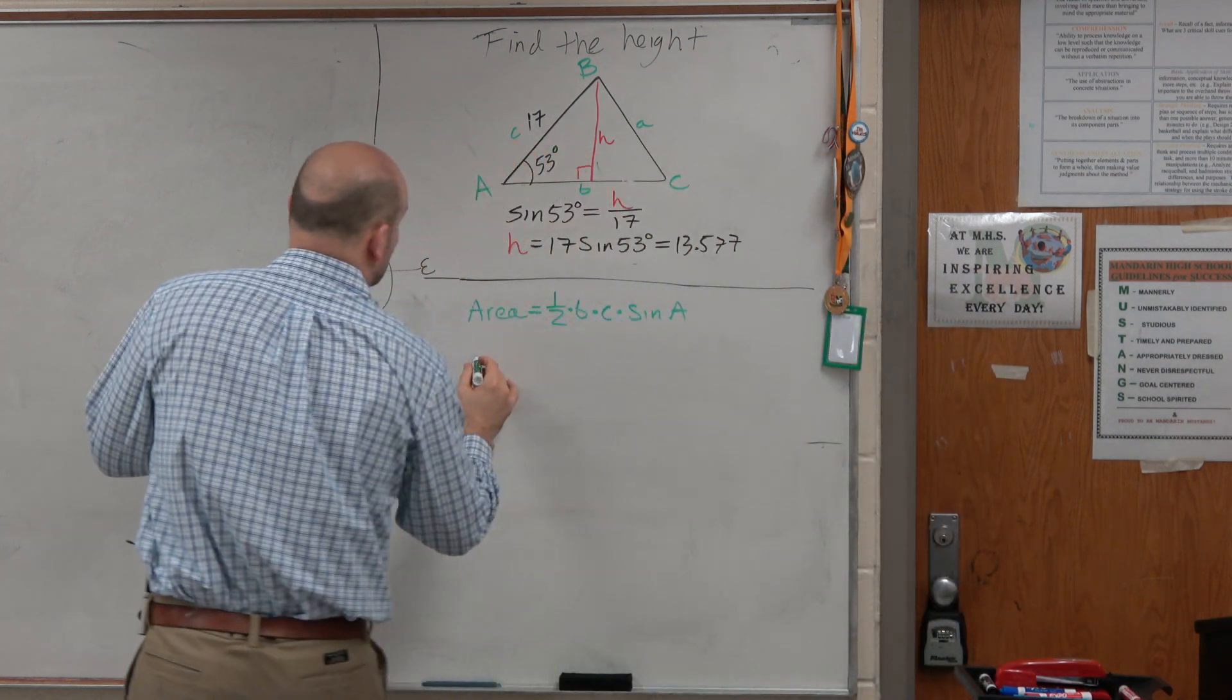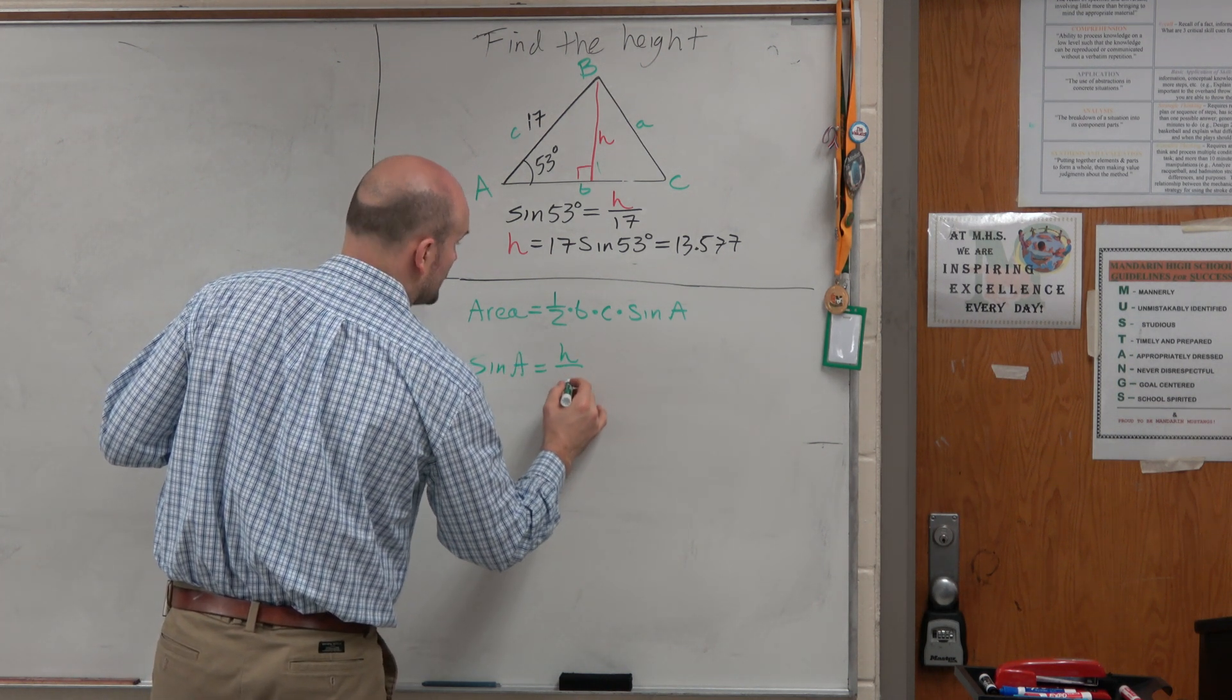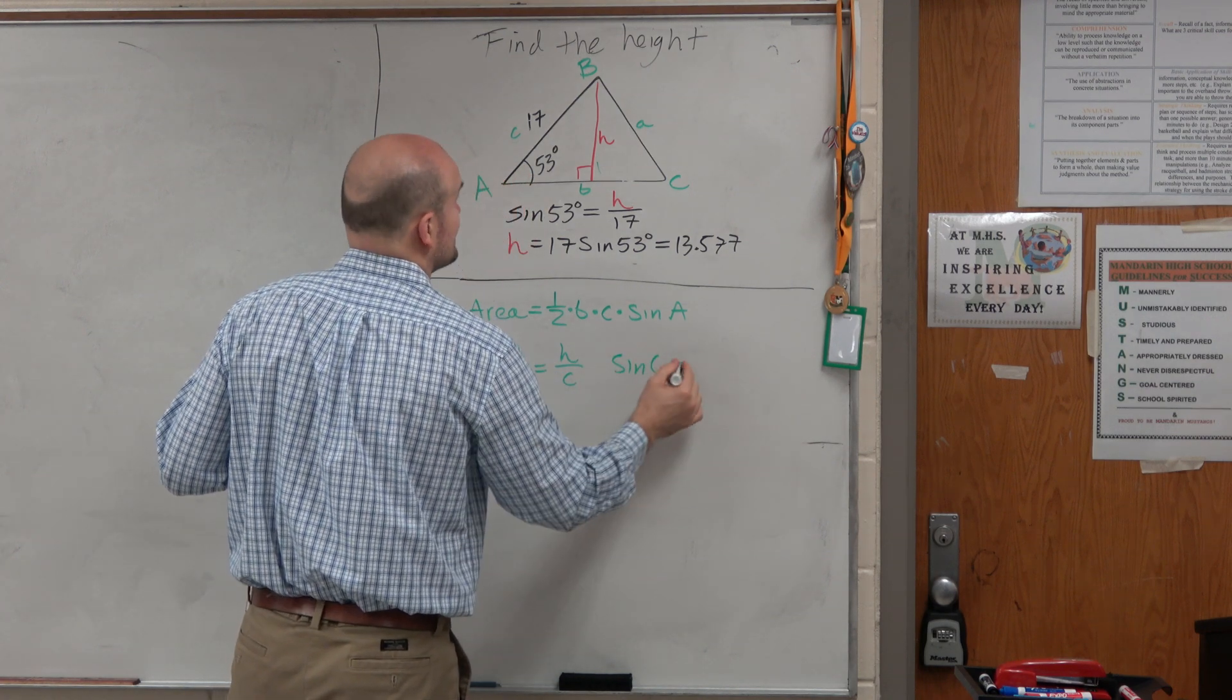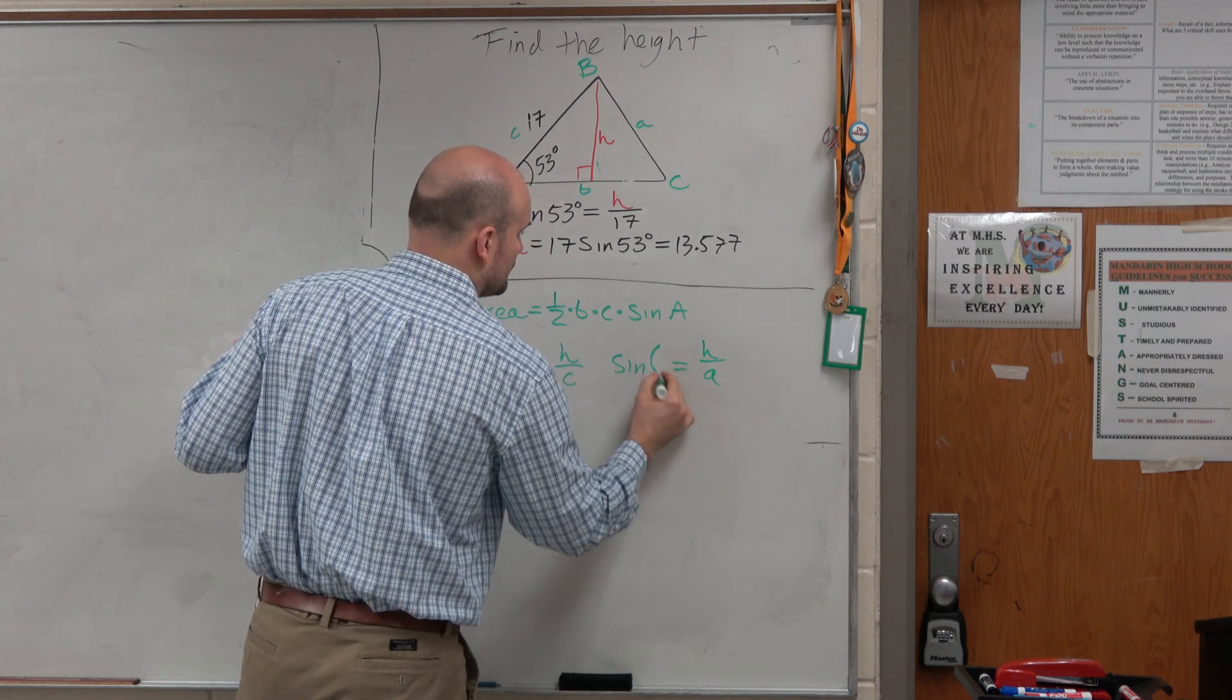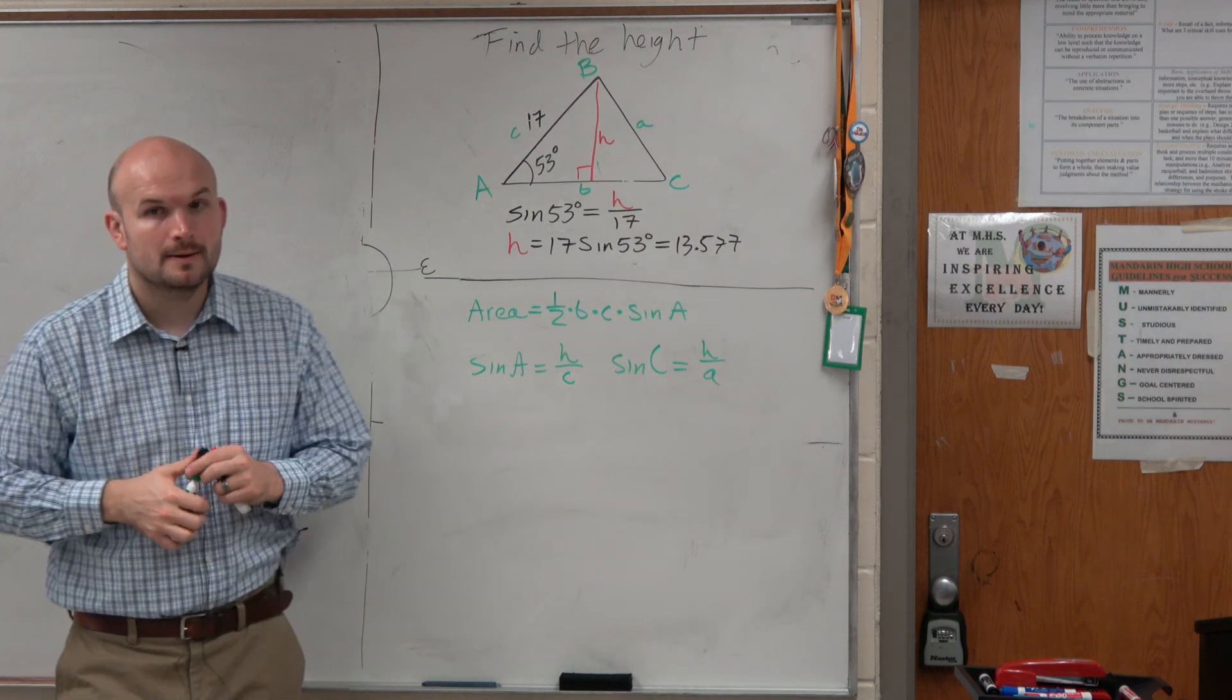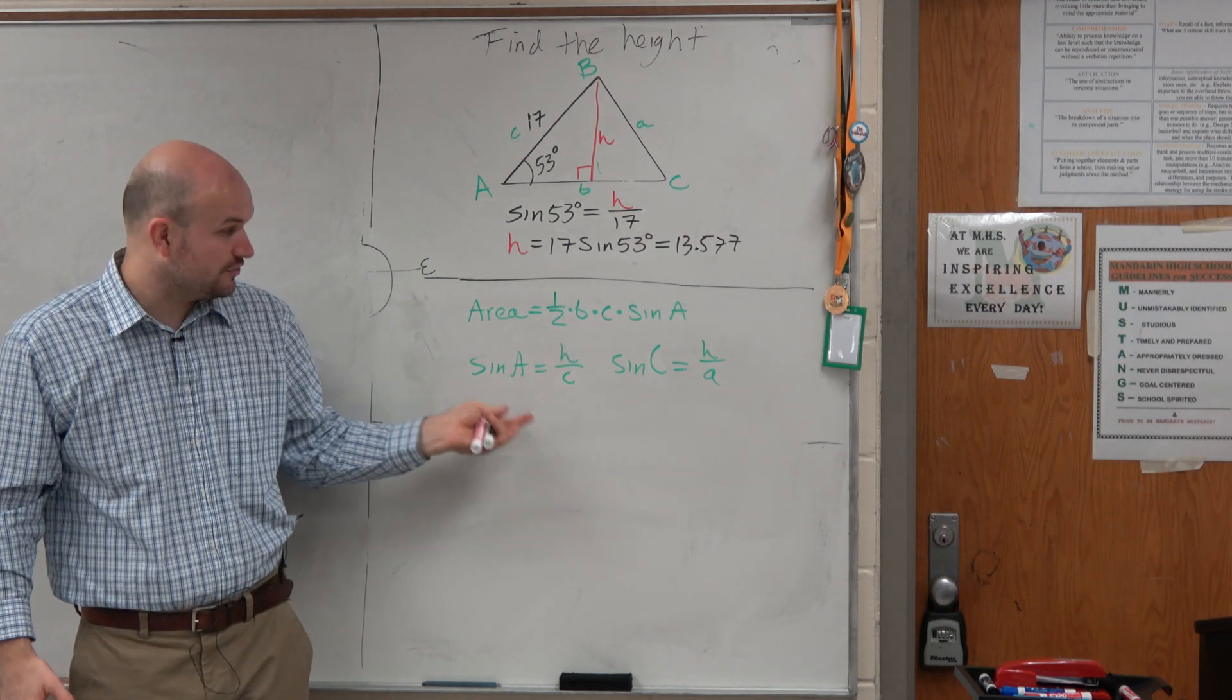For instance, the sine of A is equal to h over c, whereas the sine of C is equal to h over a. I'll make my C's really big, my little c's really small. But based on the information of that triangle, Ellie, does that make sense? I can create those two relationships.